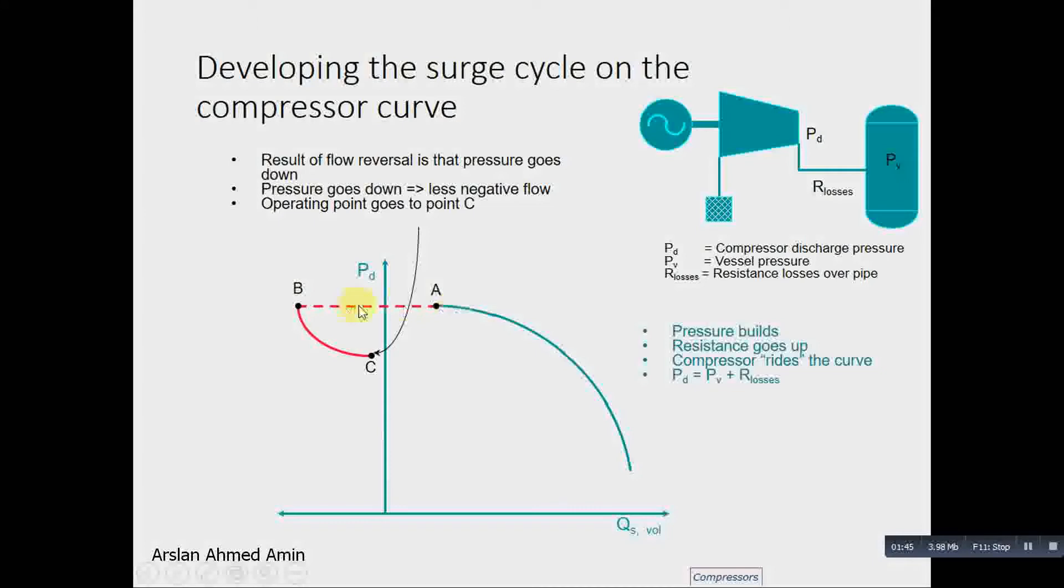It starts oscillating. The point goes to point B, then it goes to point C, and then it reverses and stabilizes. It goes to point D.